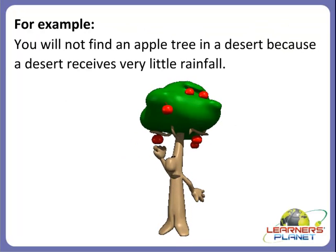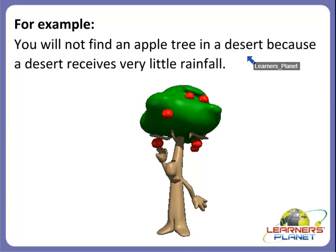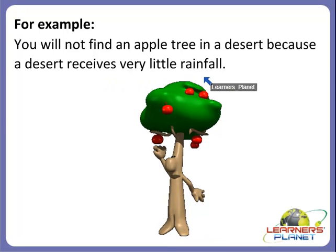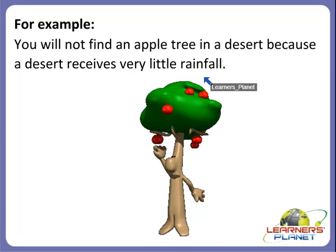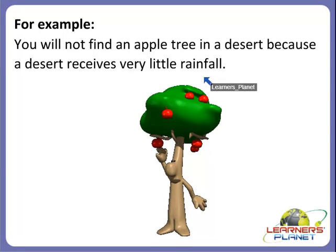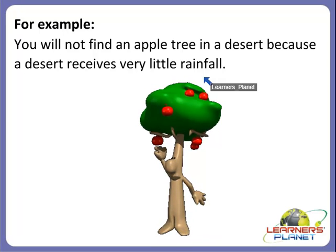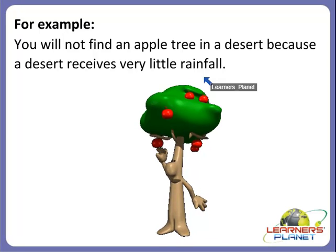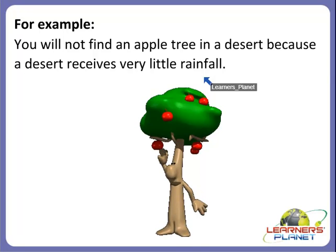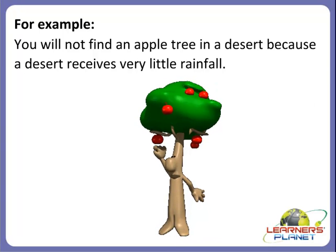Here is one interesting example: you will not find an apple tree in a desert, because a desert receives very little rainfall. Different areas have different plants, and all plants need to adapt themselves to be able to survive. An apple tree cannot grow in a desert because it receives very little rainfall, and an apple tree needs heavy rainfall to grow apples.